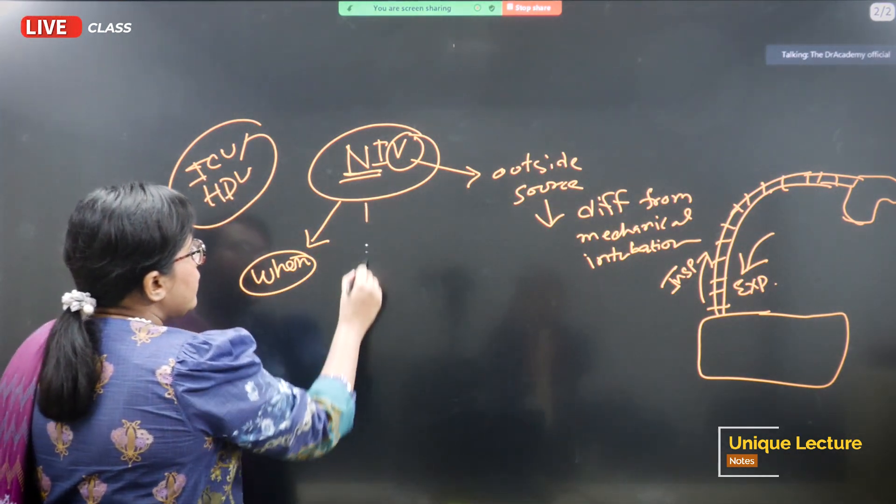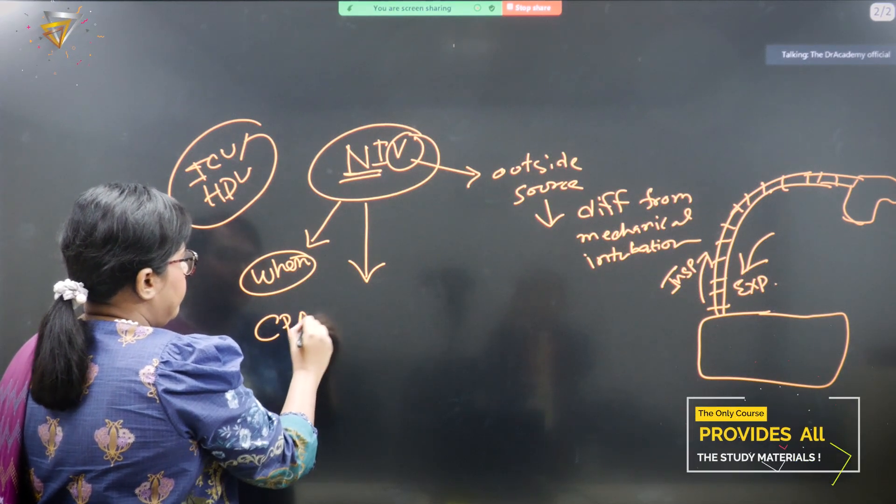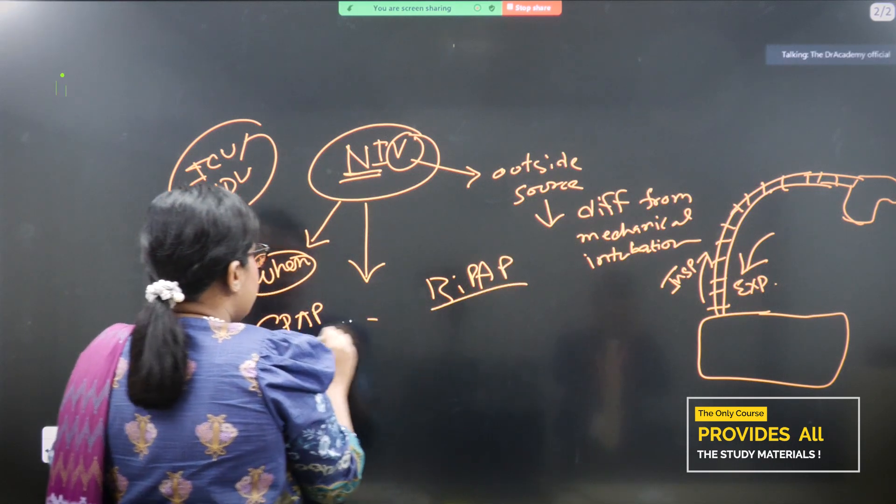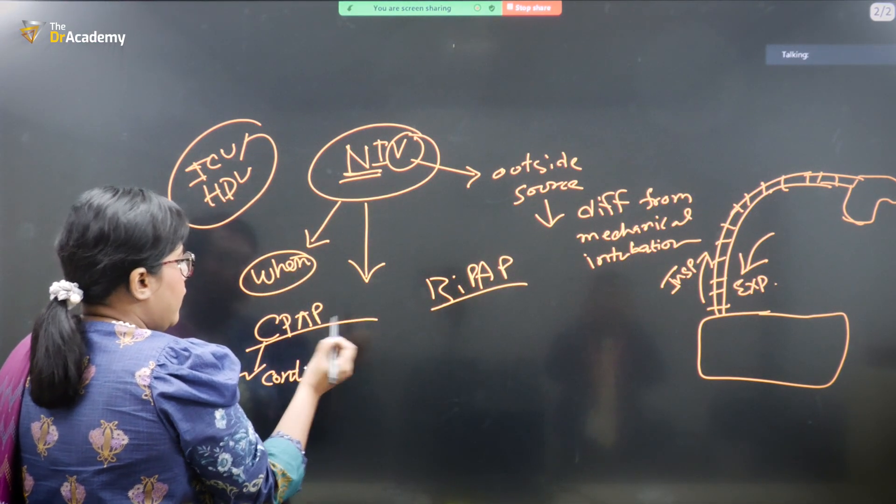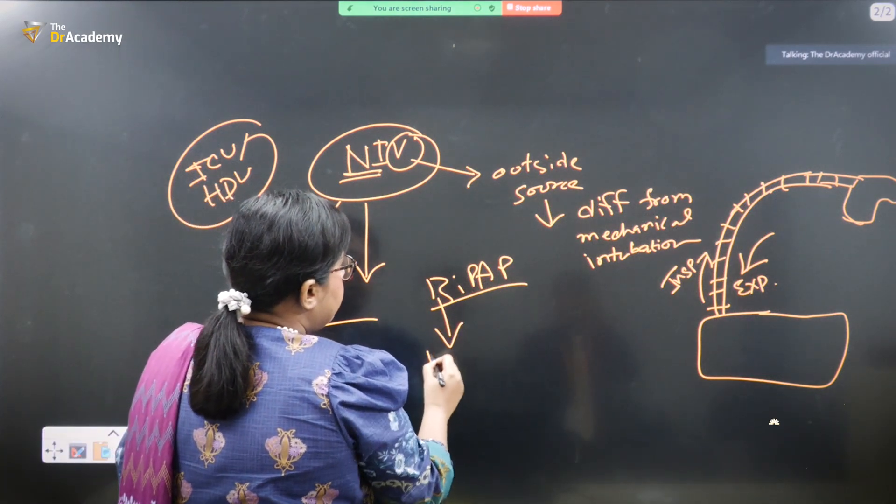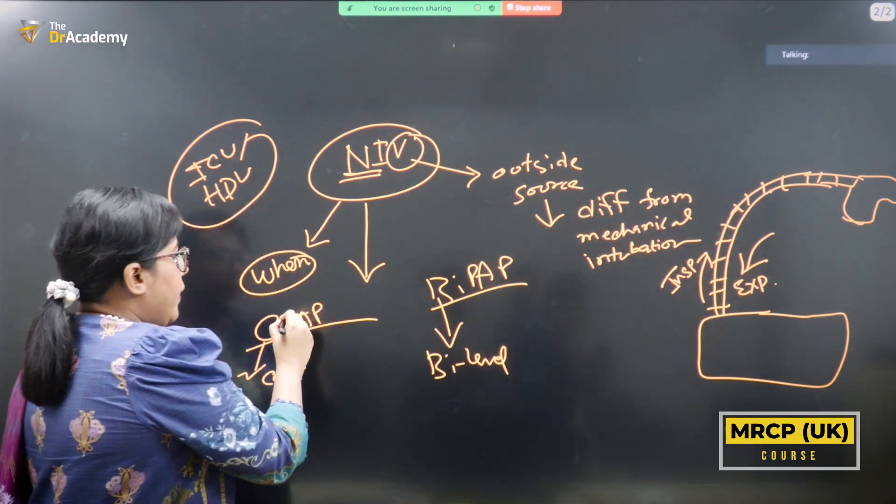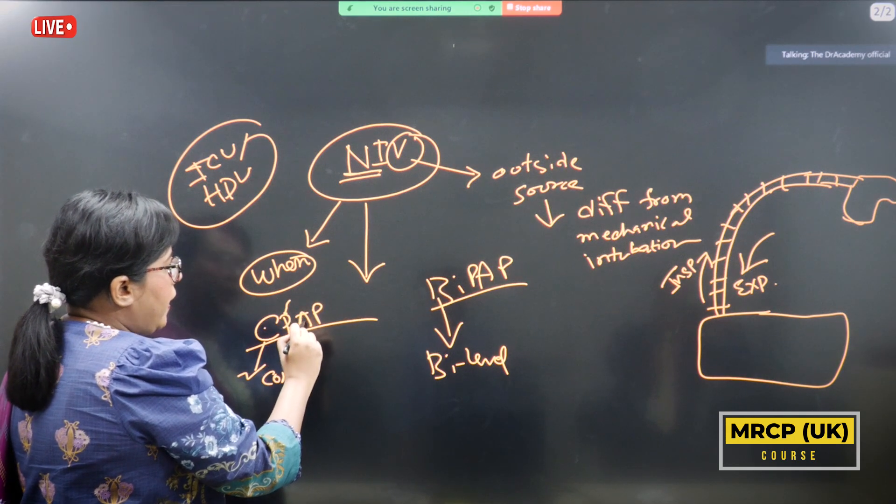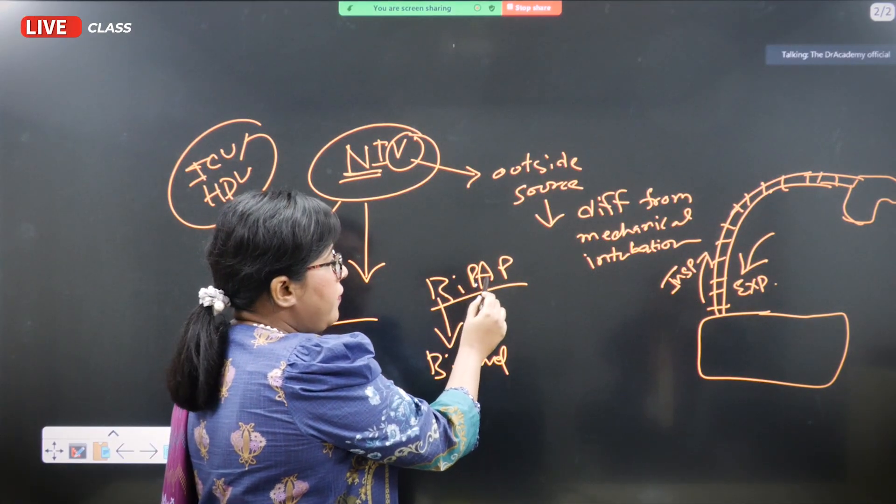There are basically two types of non-invasive ventilation. One is the CPAP and the other one is BiPAP. So CPAP is continuous and BiPAP is bi-level. The rest of the word is basically same: continuous positive airway pressure and bi-level positive airway pressure.